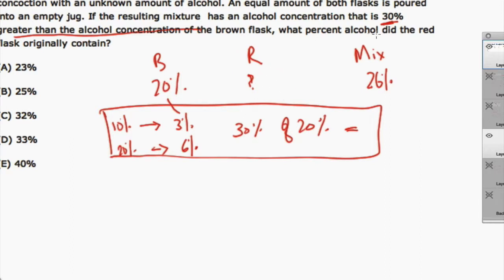And the question is asking, what is the alcohol that the red flask contains? So what's being asked? Let's just say this is X%. The other important piece of information is that an equal amount of both flasks was poured in. So what that means is that in volume terms, let's say they took V liters or whatever volume from the brown flask and exactly the same from the red flask. So V from each, and they mix it together, and your mixture, the jug in the mixture, will contain 2V, twice the volume from each jug.